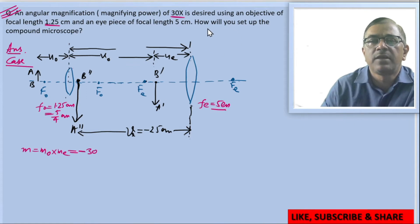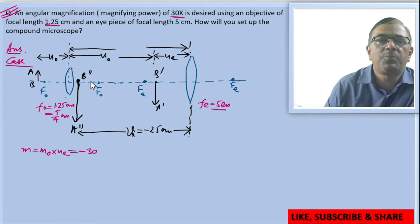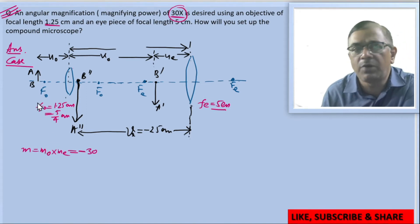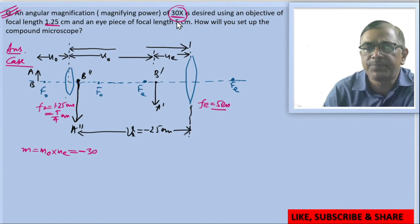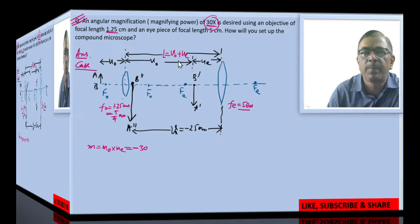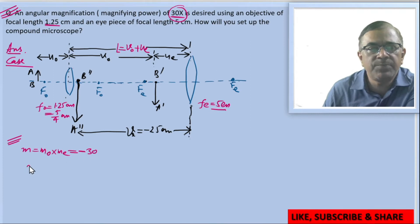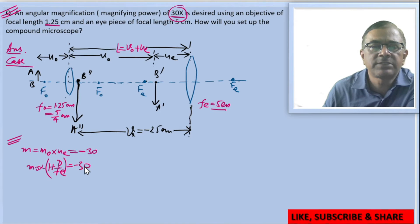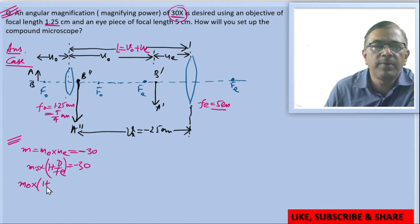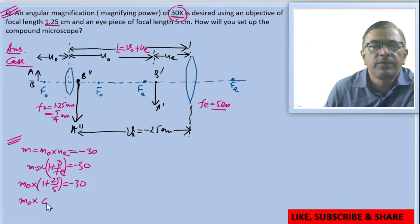We need to find how the compound microscope should be set up to achieve magnification of 30x — specifically, how far the object should be placed and what the separation between the two lenses should be. Starting with the known information: m equals mo into me equals minus 30. The value of me equals 1 plus D by fe equals 1 plus 25 by 5 equals 6. So mo into 6 equals minus 30, giving mo equals minus 5.